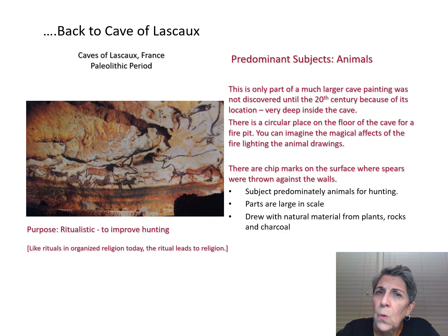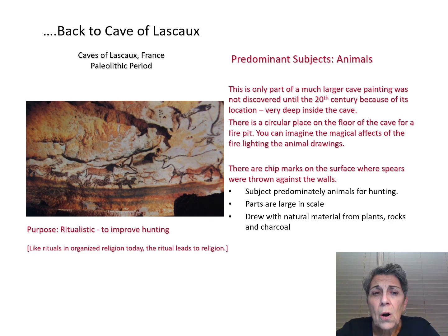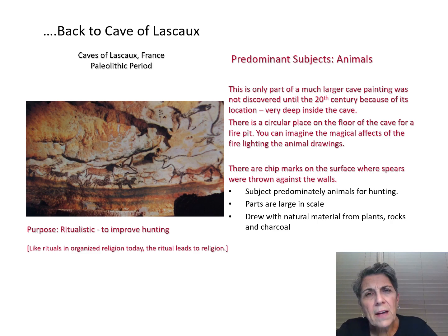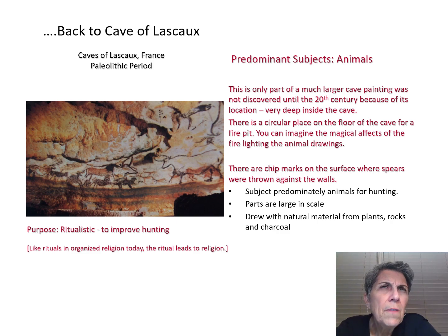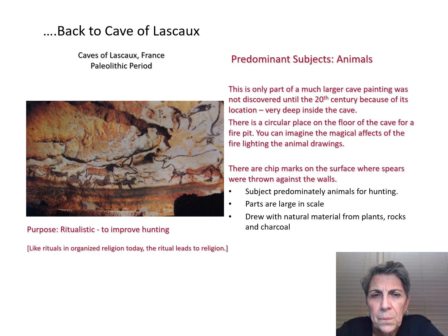We speculate ritual because there are spear marks on the walls of the cave where the animals are. What's occurring is these early human beings are throwing their spears against the wall to hit the animals — to influence hunting. So the purpose is ritualistic, to improve hunting. The subject is animals because animals are important for survival. We do have a couple of stick figures and actually a handprint, which is sort of cool. But predominantly it has very few human figures compared to the African cave paintings, which are more vigorous with figures.